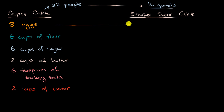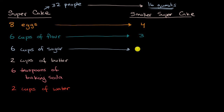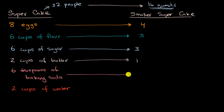Instead of eight eggs, for our smaller super cake you could have four eggs. Instead of six cups of flour, you could have three cups of flour. Instead of six cups of sugar, you could have three cups of sugar. I'm just taking half of each of these numbers. Instead of two cups of butter, you could have one cup of butter. Instead of six teaspoons of baking soda, you could have three teaspoons. And last but not least, instead of two cups of water, you could have one cup of water.